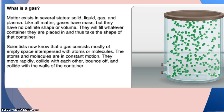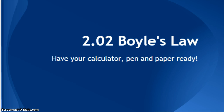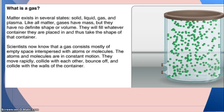So Boyle's Law — and actually we'll be talking about two other laws — all have to do with how gases interact. So we're going to start out with a quick review of what is a gas. Matter exists in several states: solid, liquid, gas, and plasma. Like all matter, gases have mass, but they have no definite shape or volume. They will fill whatever container they are placed in, and thus take the shape of that container.